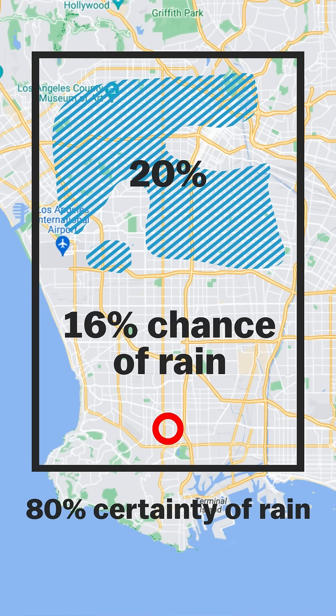So if you're down here, that 16% will seem pretty accurate. But if you're here and it starts raining buckets, you now have a better idea why.